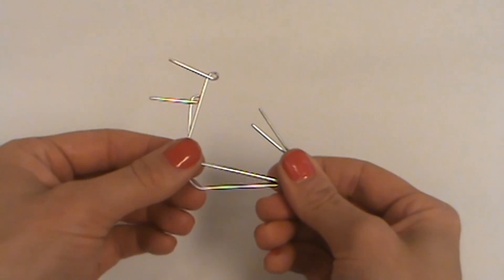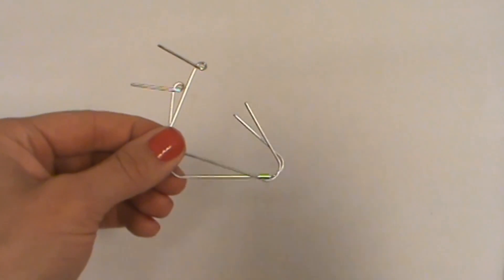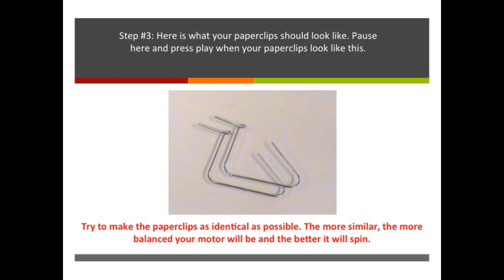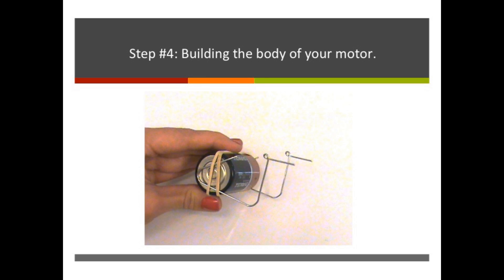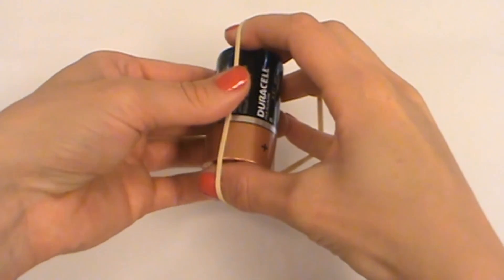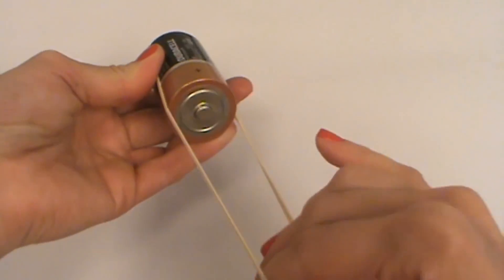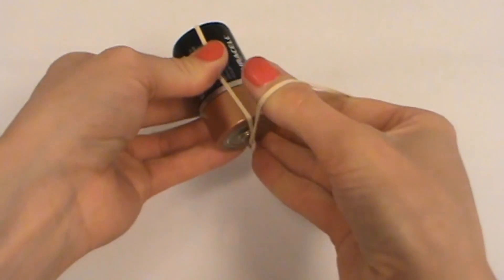So here's what your paper clips should look like. Pause here when you get them looking like this, press play and we can move forward. Now take your D battery and your rubber band and wrap the rubber band around it twice in the long direction.